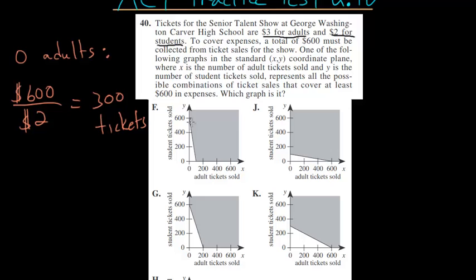We know that on the Y axis, this graph should be intersecting right about here at 300. So, let's now consider the case where zero students buy tickets, so only adults are buying tickets.